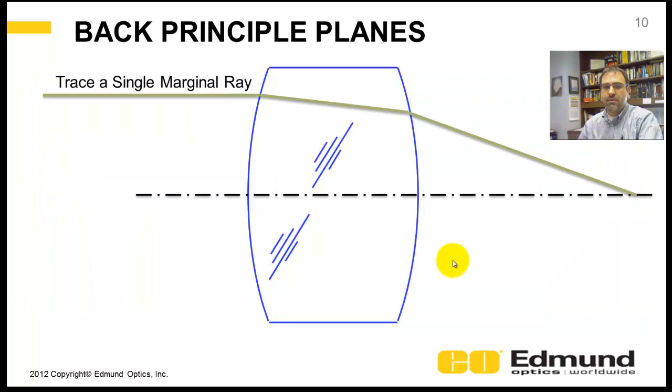Let's start in on principal planes. To do that, we're going to get the back principal plane first by tracing a single marginal ray from infinity, coming from the left.